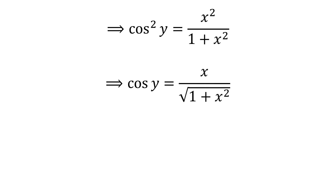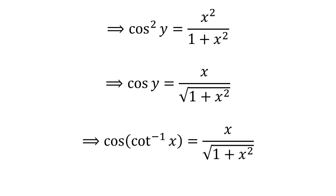Taking the square root of both sides gives us cosine of y equals x divided by the square root of 1 plus x squared. Since we assumed y equals arccotangent of x, we conclude that cosine of arccotangent of x equals x divided by the square root of 1 plus x squared.